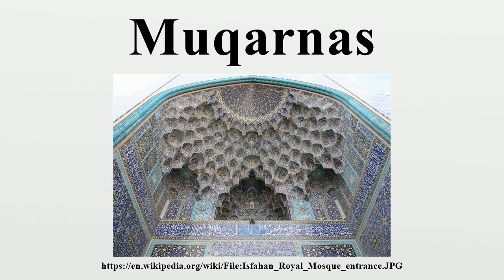Mukhanas may be made of brick, stone, stucco, or wood, and clad with tiles or plaster. The individual cells may be called alveoles.